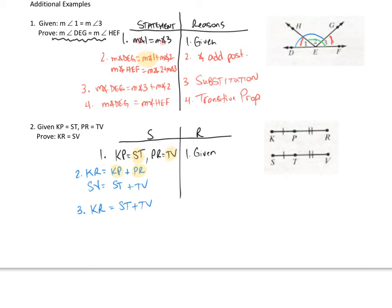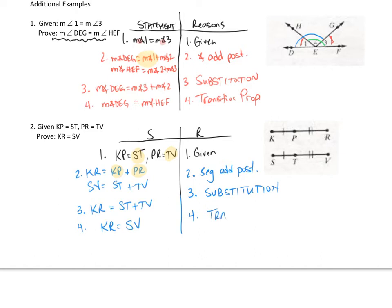Now we can conclude step 4. Step 2 was the segment addition postulate, and step 3 was a substitution step. So with step 4, KR equals SV — and this was again a transitive step.